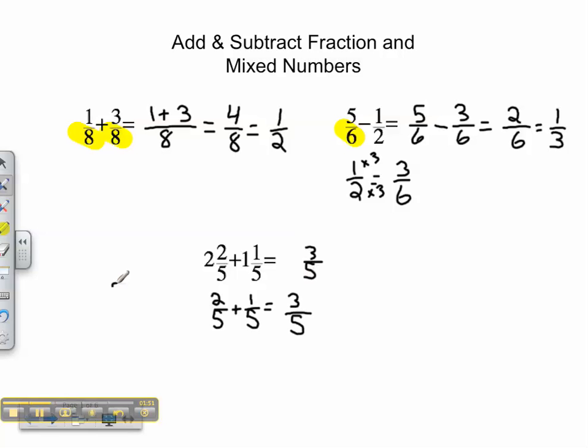Then we look to the whole number. We've got 2 plus 1. That equals 3. So our whole number is 3. And our final answer is 3 3/5. That is your tutorial on adding and subtracting fractions and mixed numbers.